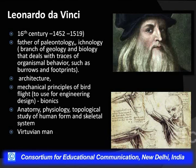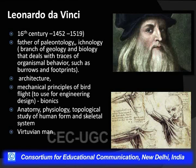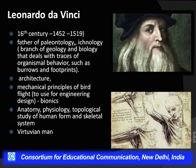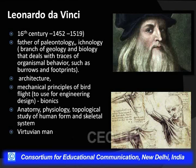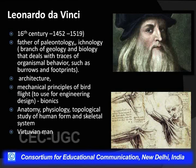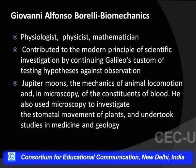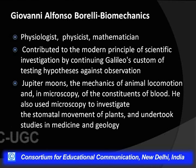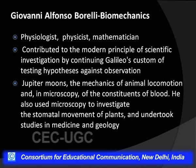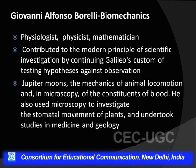Da Vinci was interested in architecture, used mechanical principles of birds, and designed the first helicopter — showing these people were polymaths. A polymath is a person who has knowledge about several fields of science, while a polyglot is a person with knowledge of several languages. The father of biomechanics, Giovanni Alfonso Borelli, was a physiologist, physicist and mathematician who talked about testing hypotheses using the scientific method, discussed Jupiter's moons, stomatal openings in plants, and undertook various studies in medicine and geology.